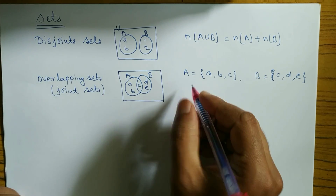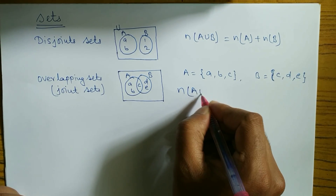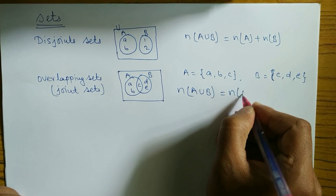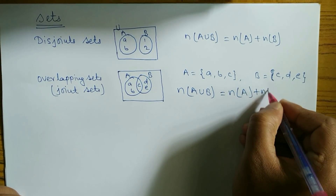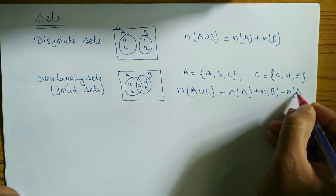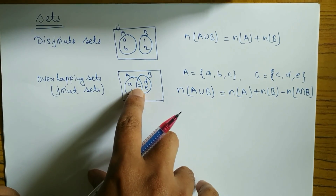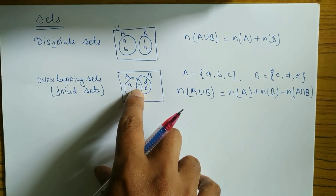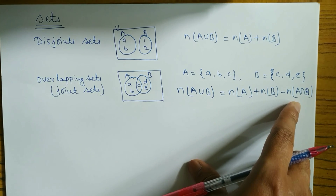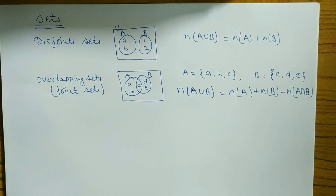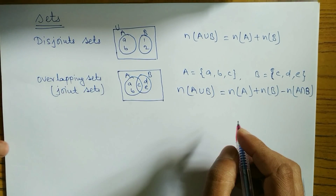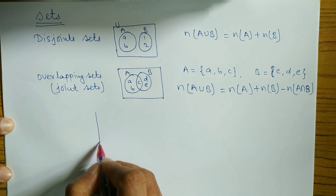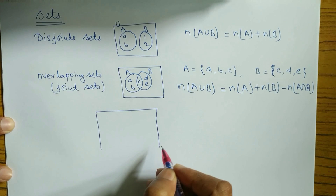Now the complete formula for overlapping sets: n(A∪B) = n(A) + n(B) − n(A∩B). We subtract n(A∩B) because the intersection element c appears once in n(A) and once in n(B), so it is counted twice and we must subtract it one time.